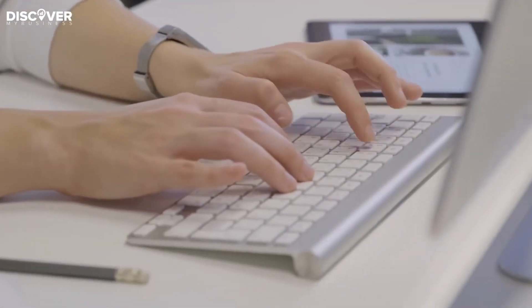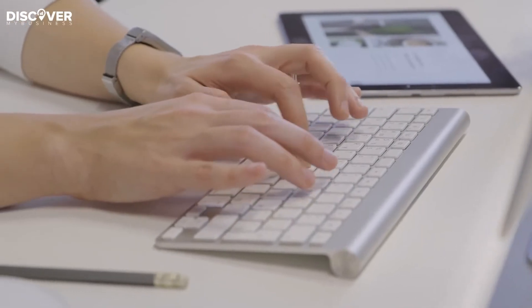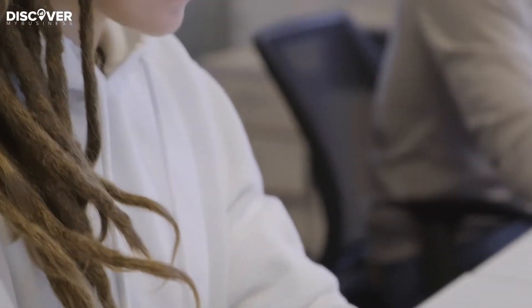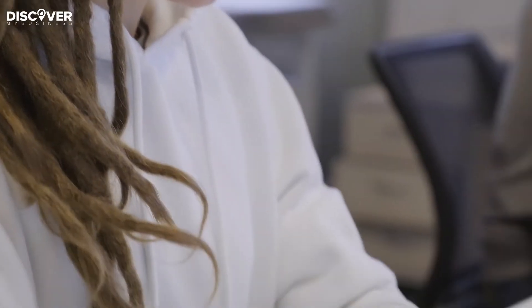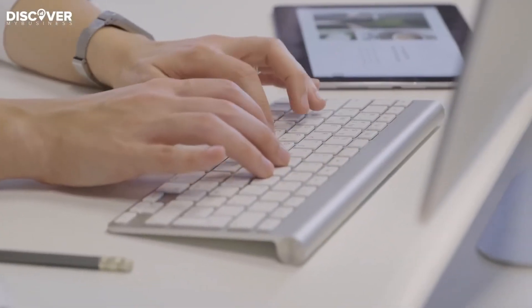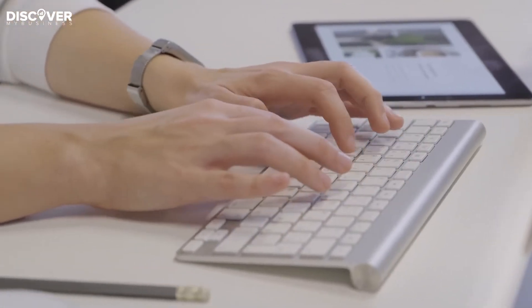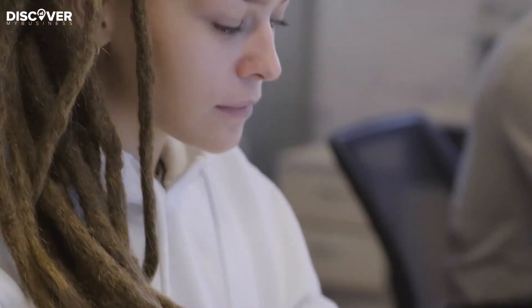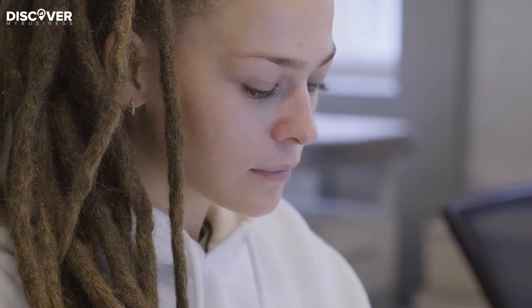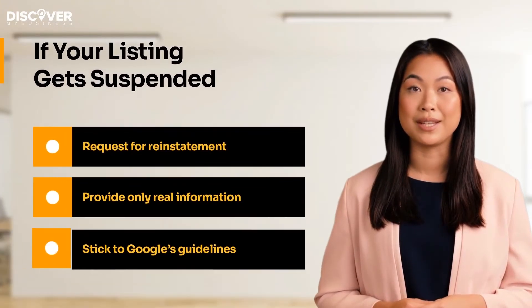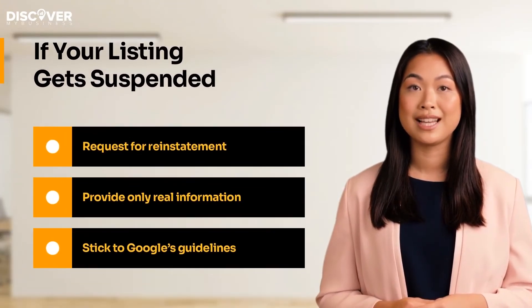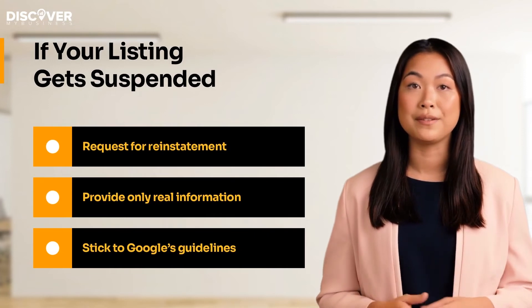If you want to avoid a potential suspension, here are some steps you can take to prevent it from happening. Take high quality photos of your business to make it look good on Google My Business. Make sure that your address is in a permanent location and that your phone number is local — Google does not allow virtual addresses. Make sure that your business hours are up to date and your Google My Business categories are accurate.